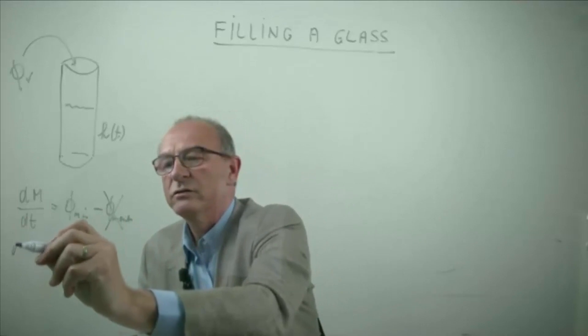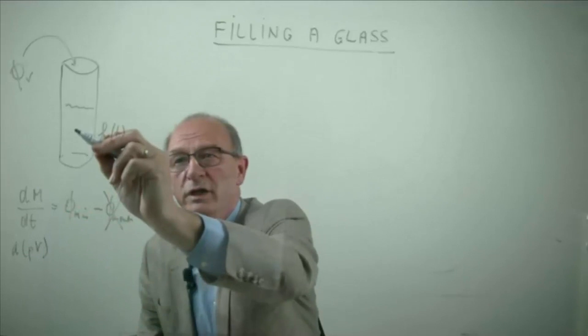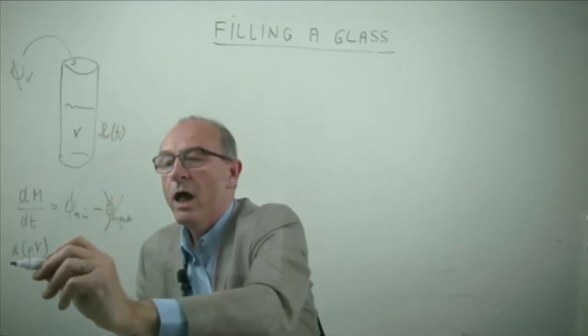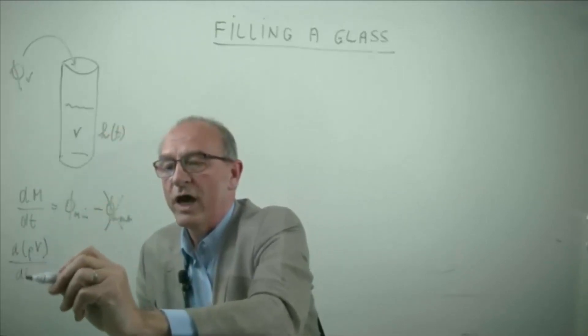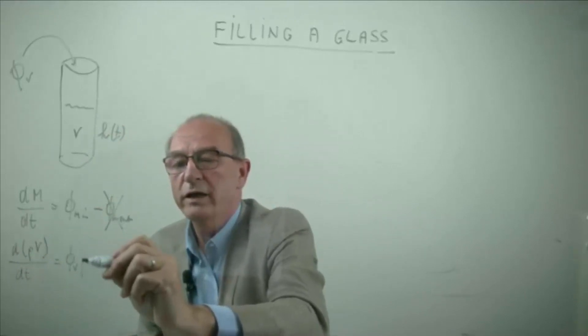Let's substitute the mass. The mass equals the density multiplied by the volume of the liquid in the glass as a function of time, which is equal to the volume flow rate multiplied by the density.